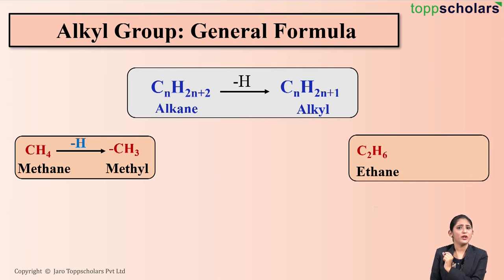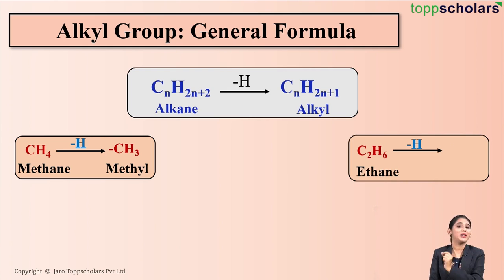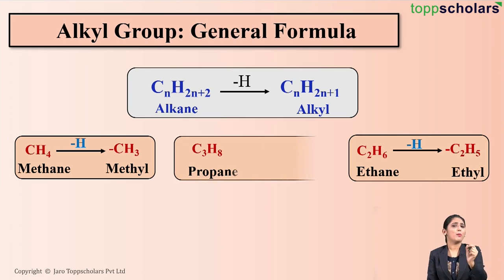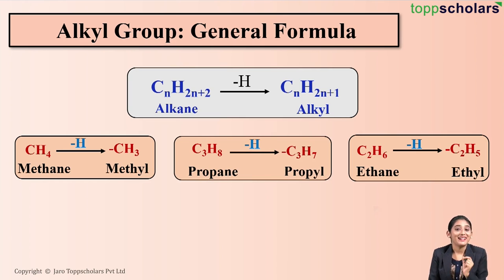Let's do it for ethane. Ethane is C2H6. So what I need to do is remove one hydrogen atom. So what will it become? C2H5, which is ethyl. Let's move on to propane — remove one hydrogen atom. What do you get? C3H7, that is propyl.